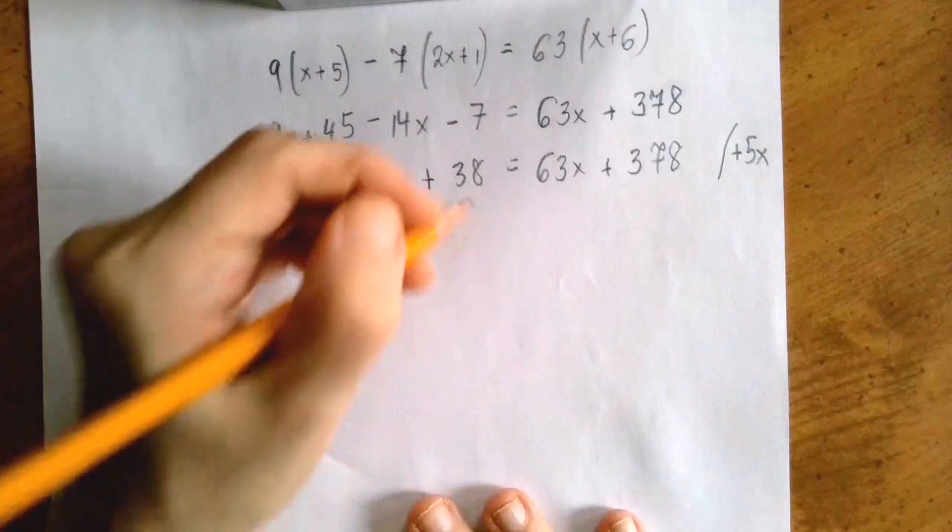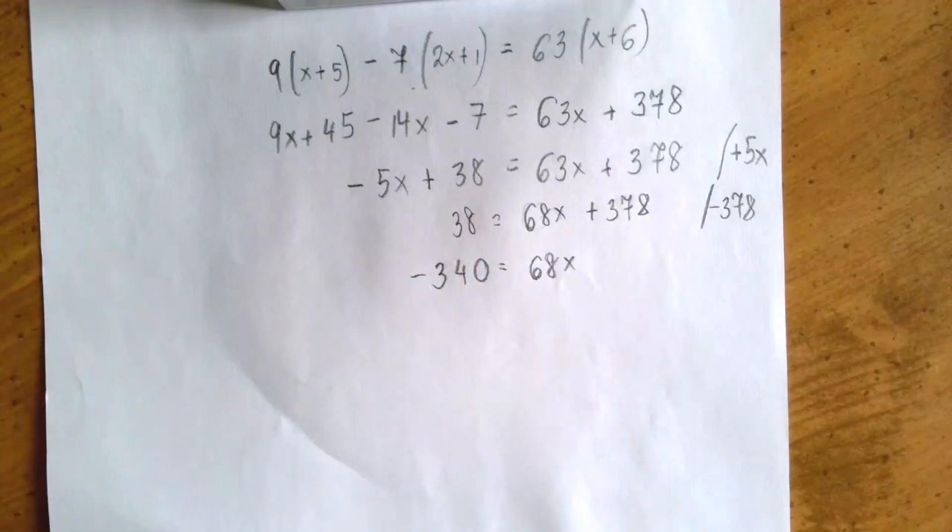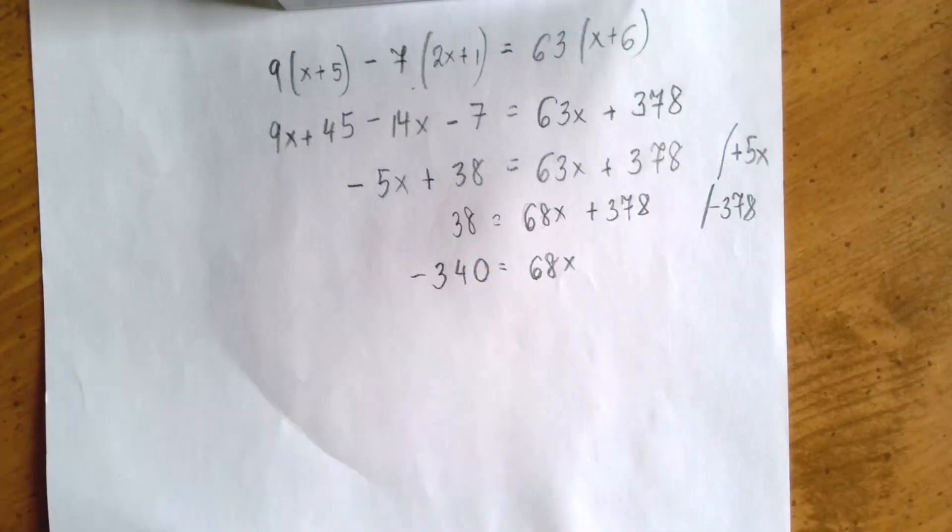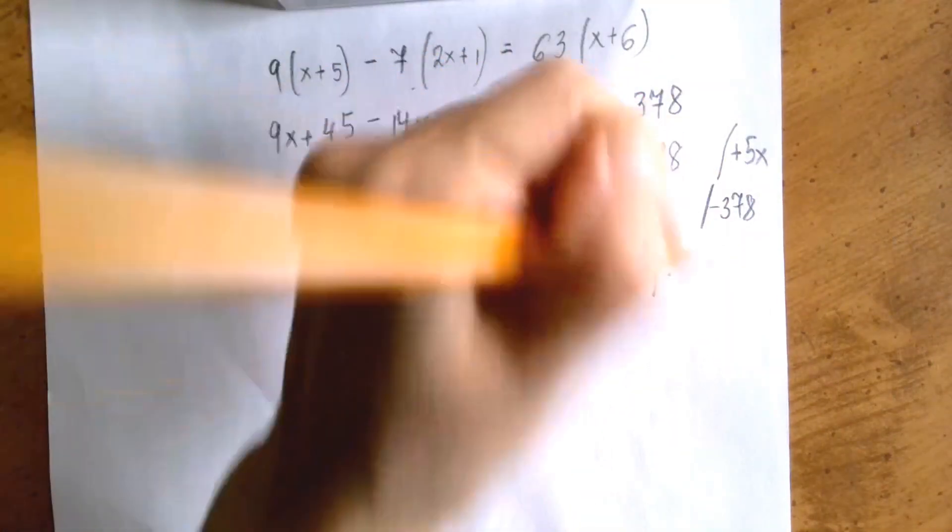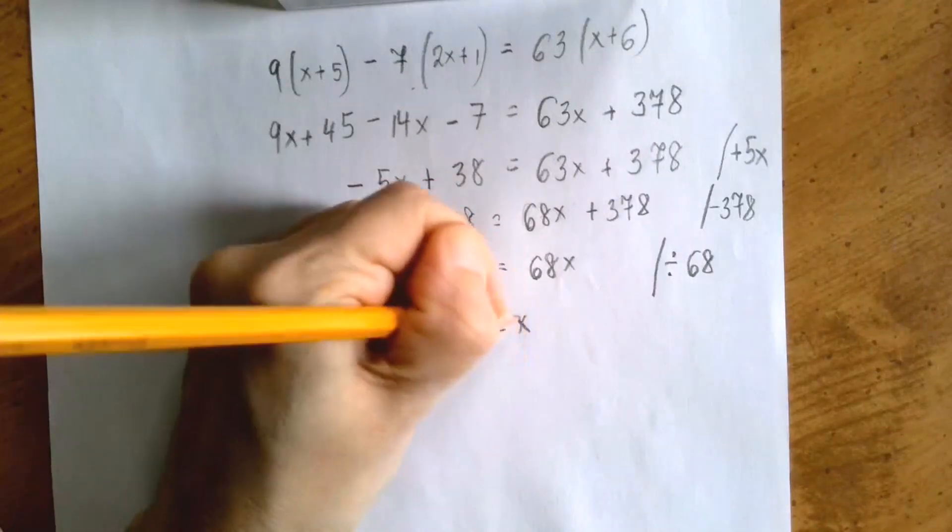Let's add 5x to both sides. Let us now subtract that 378. That's good news. This is 10 times 34. This is 2 times 34. So we're in good shape. So we divide by 68. We're going to get minus 5 equals 2x.